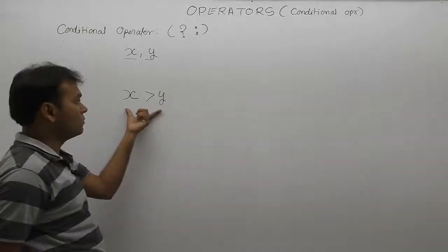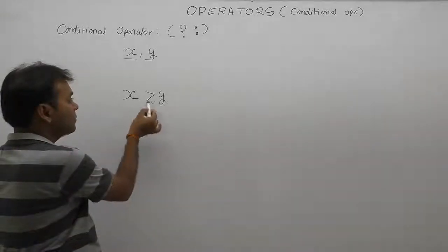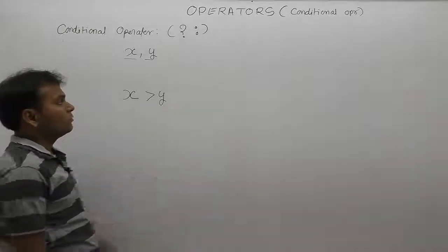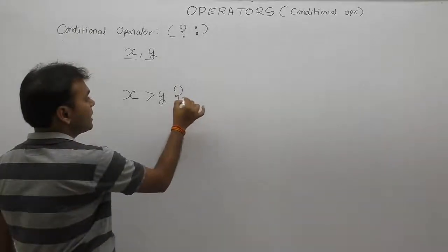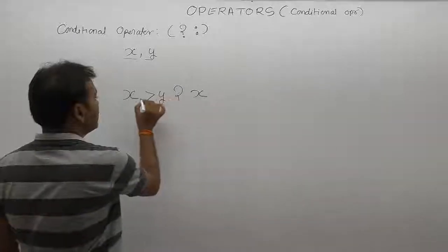If this condition is true, which one is larger? If x is greater than y, then the condition is true, so display the value of x. Otherwise, if the condition is false, then if y is larger, display the value of y.